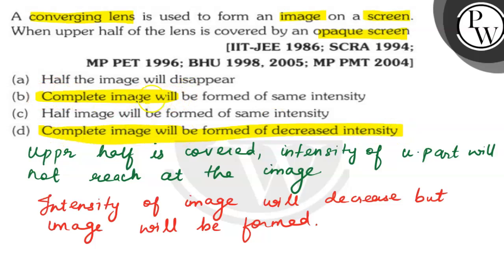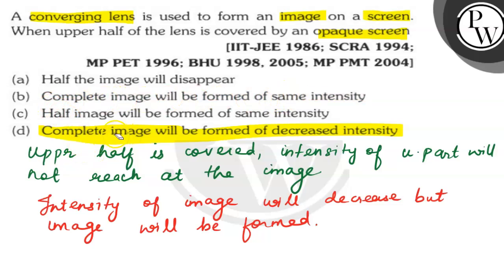And option B states the complete image will be formed with the same intensity. So this is the correct option.